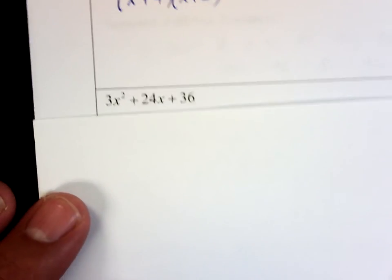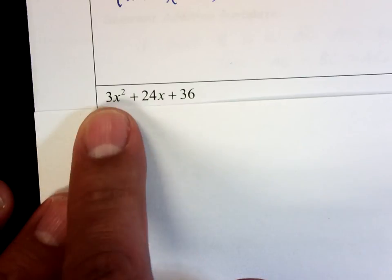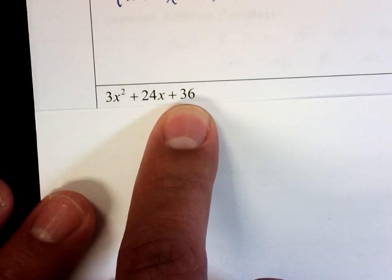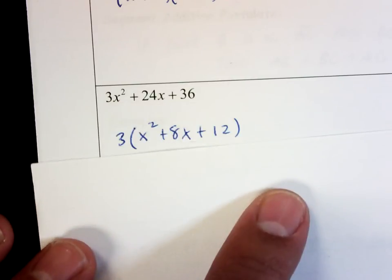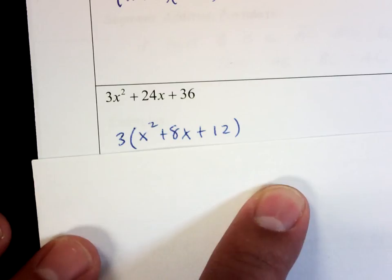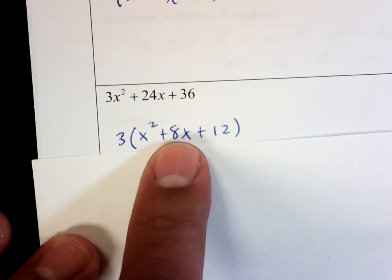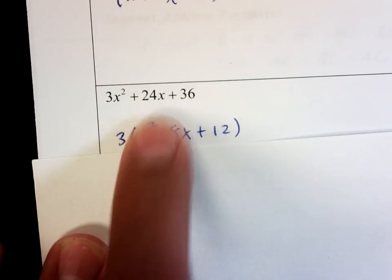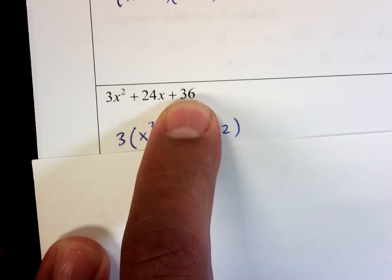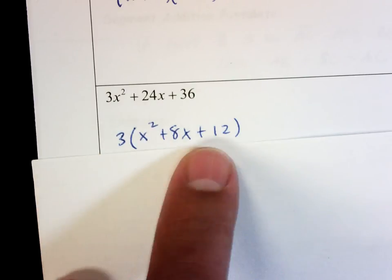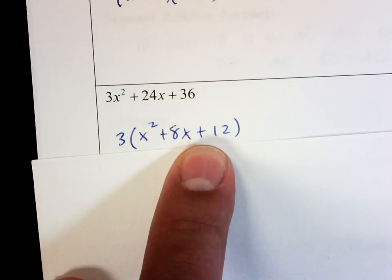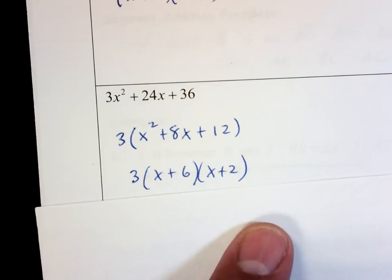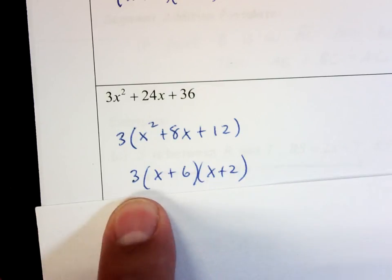All right, this one looks a little different. First things first, I see there's a number out in front of the x², but I do see that that number goes into all of these numbers also. So I can factor out the 3. I pull it out front. Notice if I run this 3 back into the parentheses, I'm back where I have 3 times x² is 3x², 3 times 8x is 24x, and 3 times 12 is 36. Now this looks just like the ones that we've been doing. What two numbers multiply to give me 12 and add up to give me 8? It's the 6 and the 2. And of course that 3 just sits there out front.